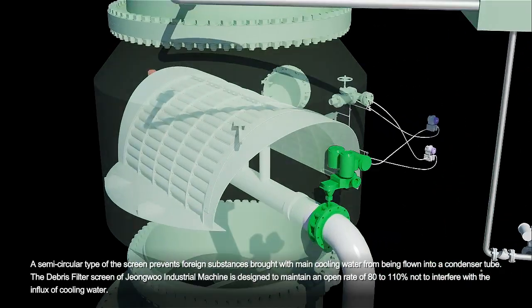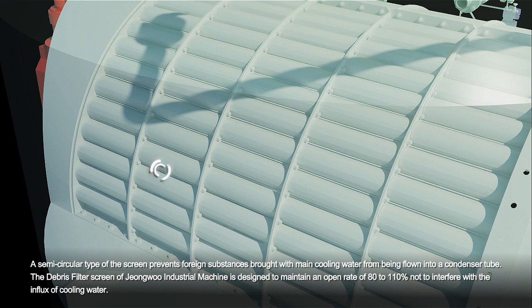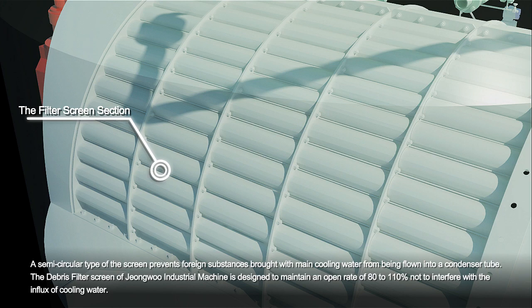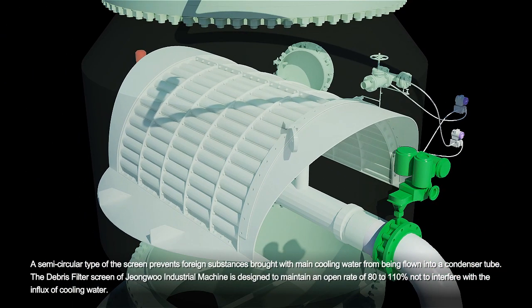A semicircular type of screen prevents foreign substances brought with main cooling water from being flown into a condenser tube. The debris filter screen of Jungwoo Industrial Machine is designed to maintain an open rate of 80 to 110 percent, not to interfere with the influx of cooling water.